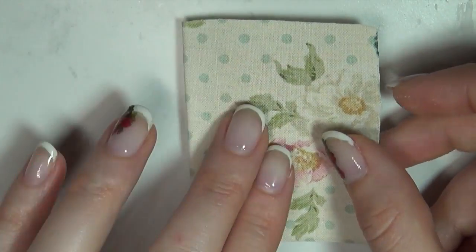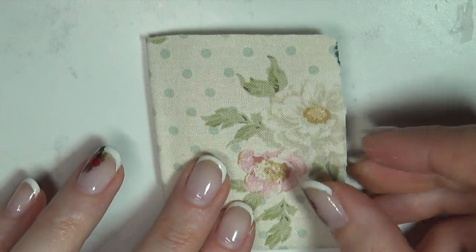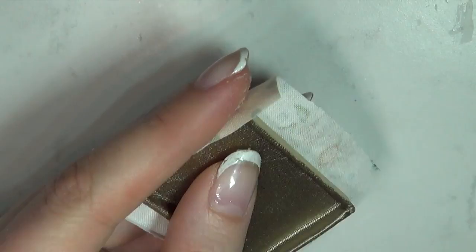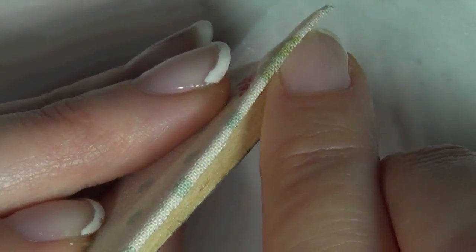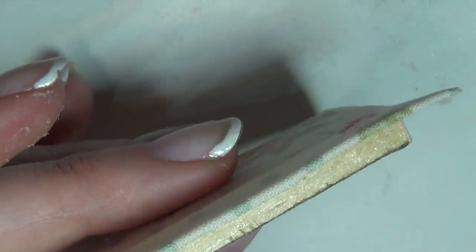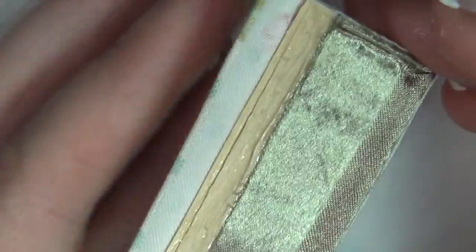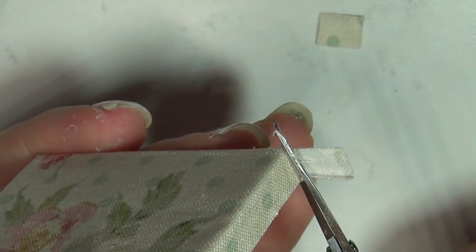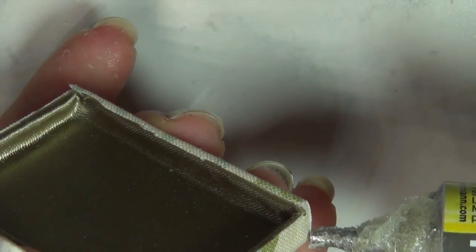Then flip it around and glue the outside fabric in place. Trim all the excess.